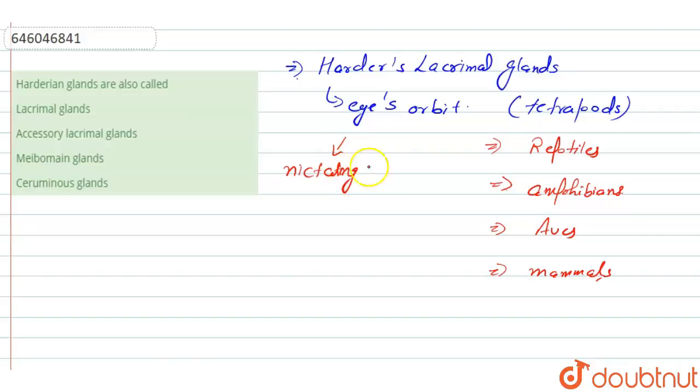And in humans, this gland is poorly developed. This Harderian gland is poorly developed, or we can say that it is rudimentary in case of humans.